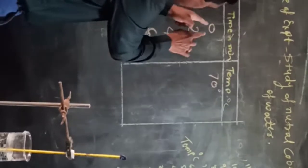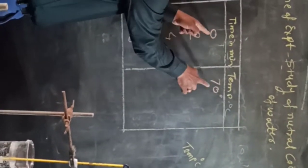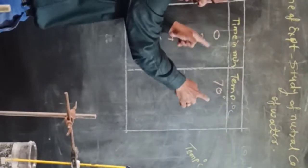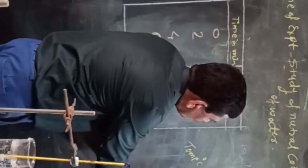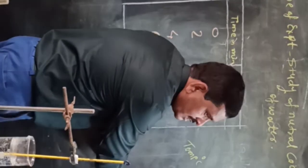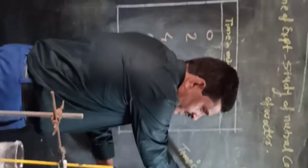This is the x-axis and this is the y-axis. At zero minutes on the x-axis, the temperature on the y-axis is 70 degrees. We plot this first point on the graph.